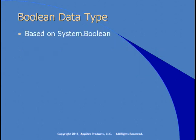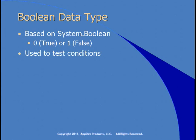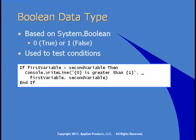The Boolean data type is based on System.Boolean and has two values: zero meaning True and one meaning False. You can use Boolean to test conditions — if something is true, if something is false. For example, in code: if the value of the first variable is greater than the second variable, display some text using Console.WriteLine. The expression 'first variable greater than second variable' evaluates to True if the value is greater, or False if it's not.